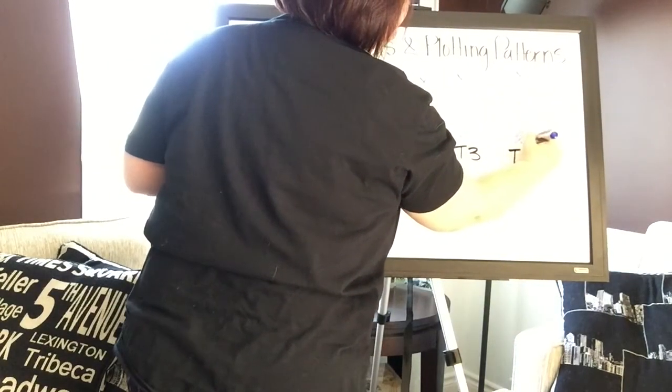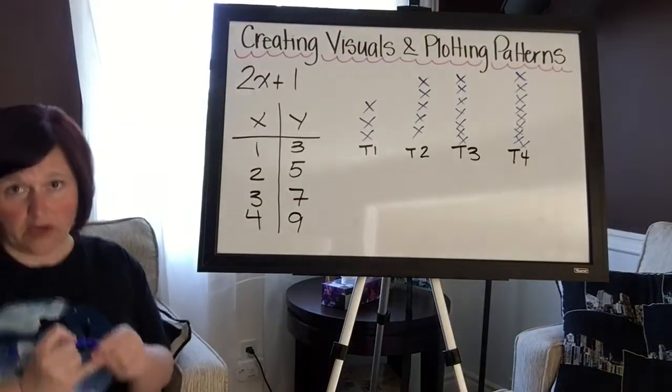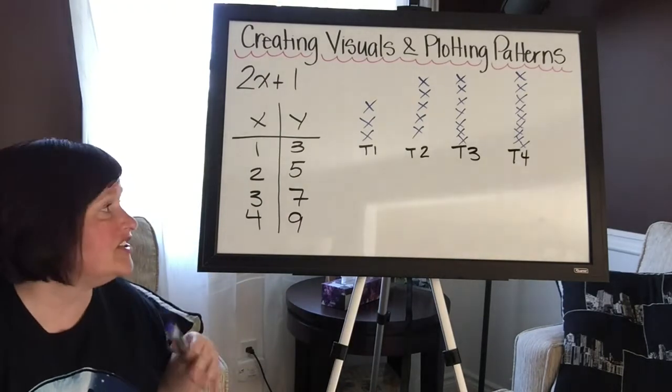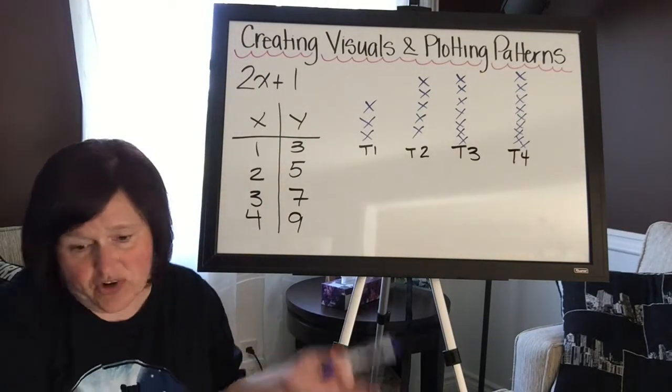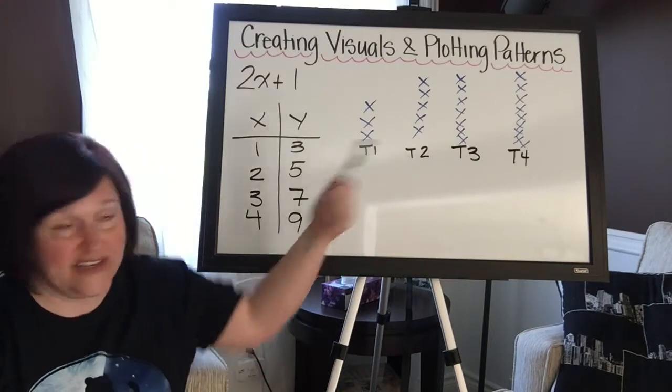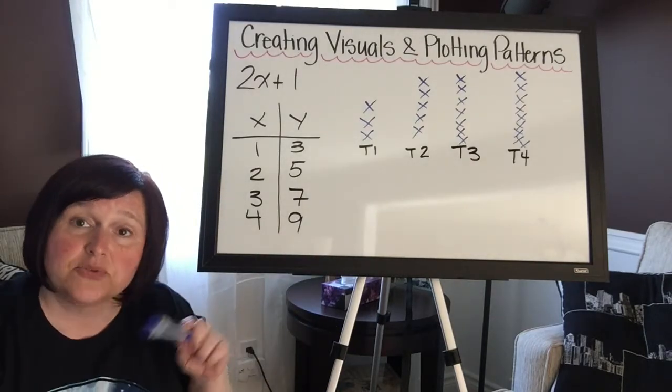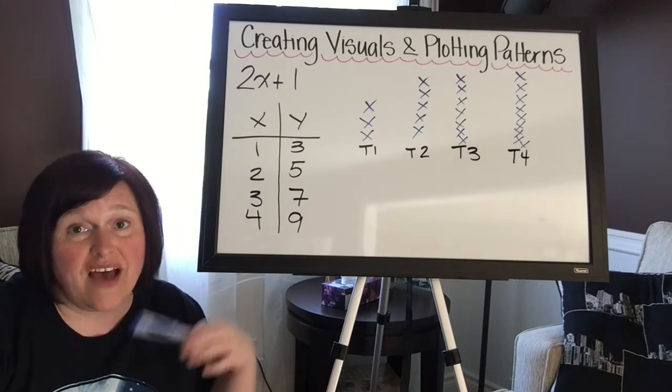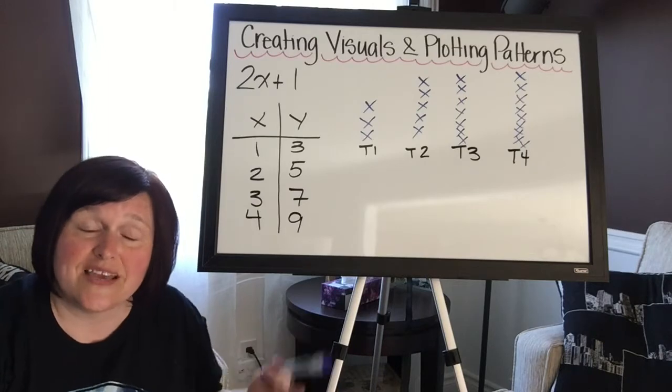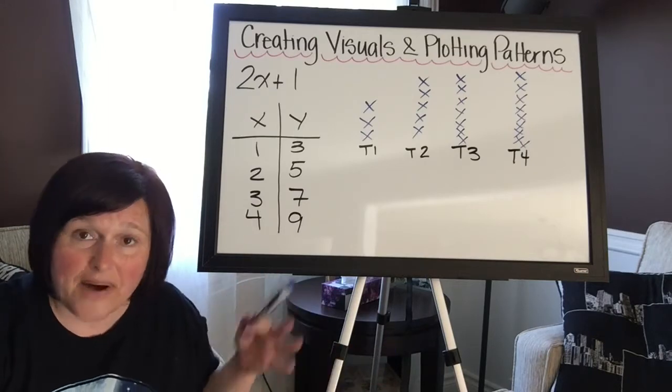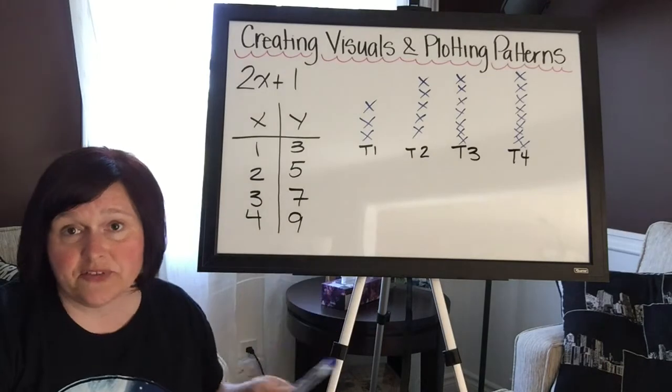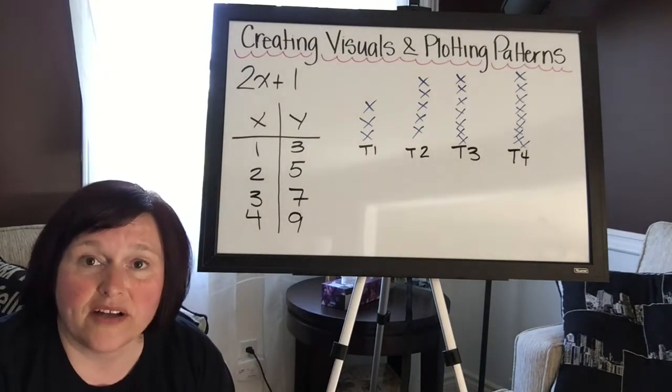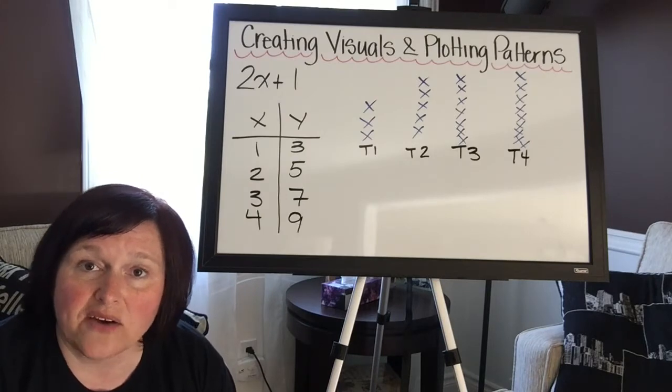Term number three: one, two, three, four, five, six, seven. And in term number four: one, two, three, four, five, six, seven, eight, nine. Okay, so that would be an appropriate visual. You don't have to use x's, you could use circles, you could use squares, triangles, you could use any formation. It doesn't have to be in a line. As you learned last week when we talked about it, basically you can have the same term number but different, or sorry, the same algebraic expression but you can have many different ways to actually show it in a visual.